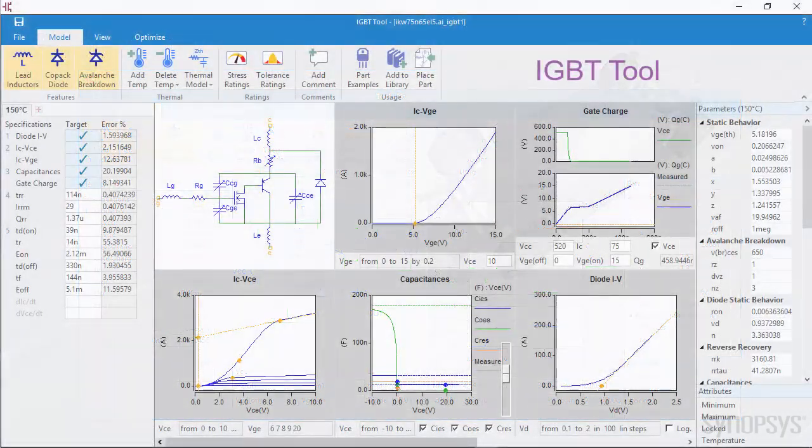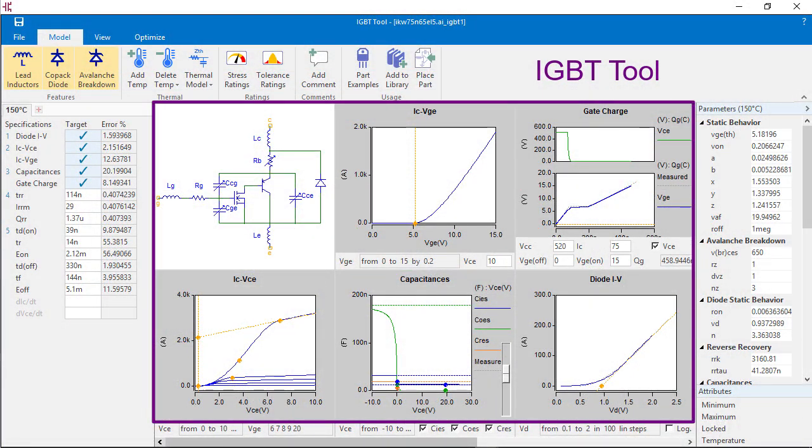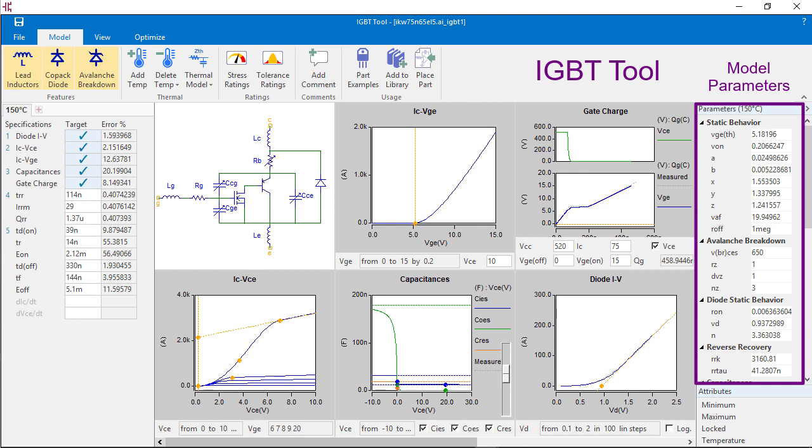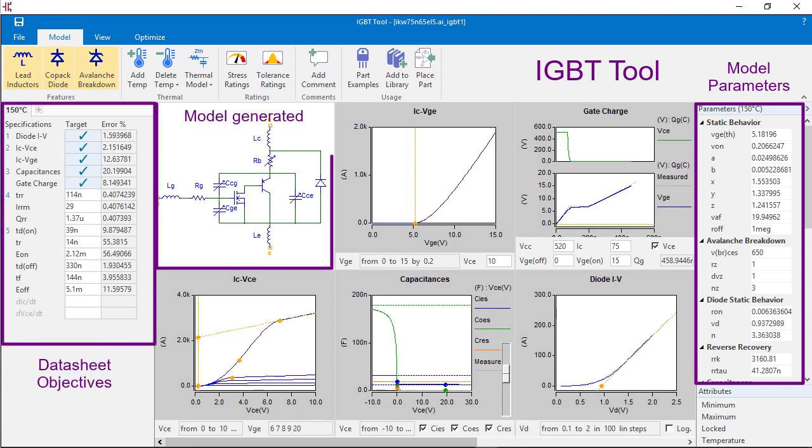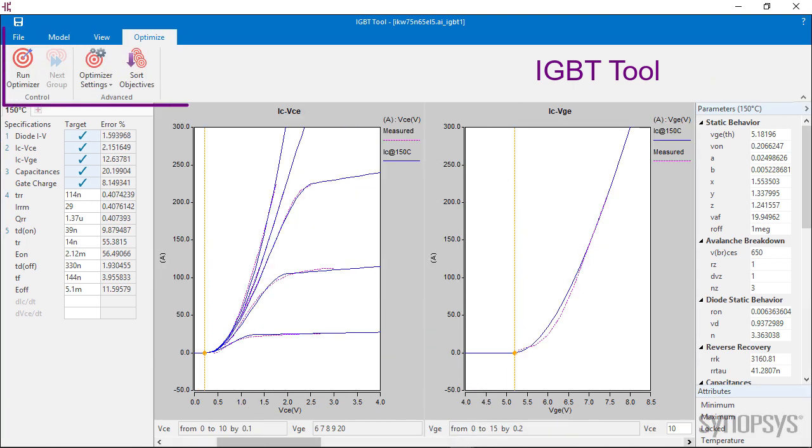The IGBT tool characterizes different behaviors of the device by optimizing model parameters based on data sheet objectives and automatically generates accurate IGBT simulation model. With the help of numerical optimization, model parameters are matched with data sheet values.